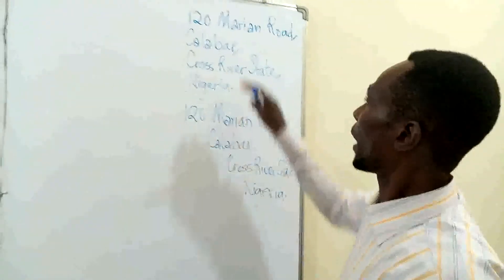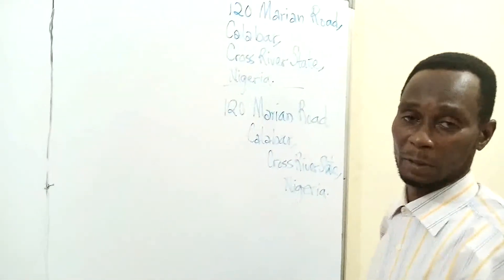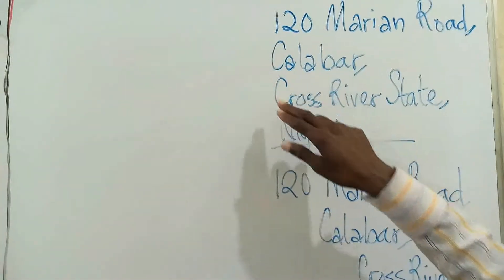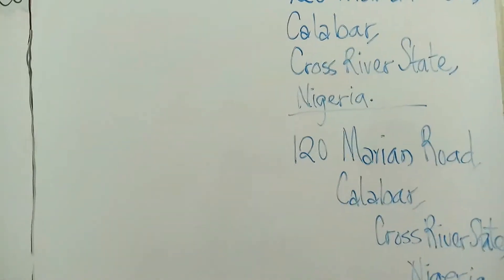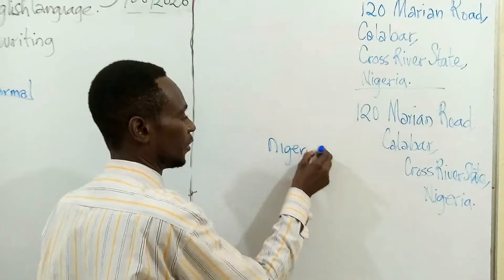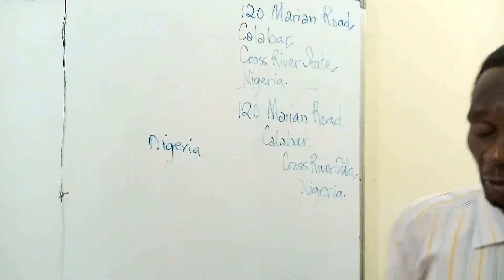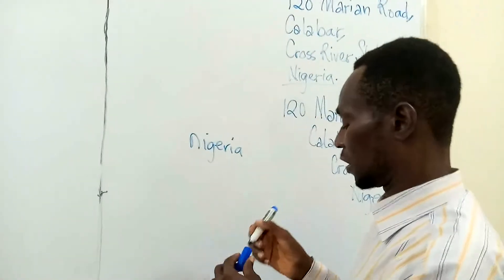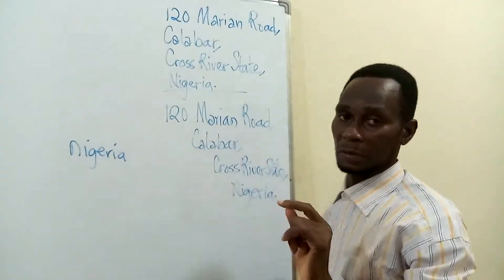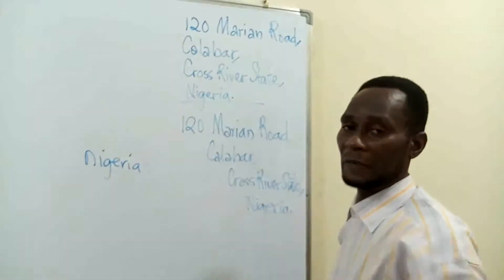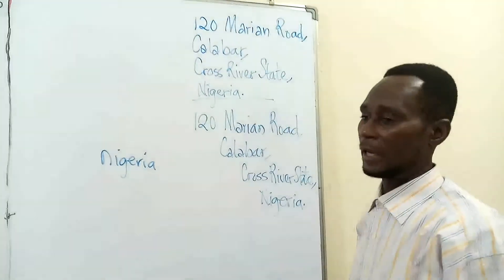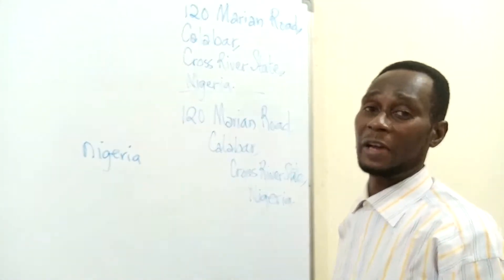Look at the initial alphabet of every word there — you see that it all starts with capital letters. Look at the M in Marian, the R in Road, Calabar, Cross River State — all three words start with capital letters. Nigeria too. If you write Nigeria with a small letter, you will be penalized. Everything in the address uses proper nouns — names of roads, cities, states, countries — so you don't start them with small letters.